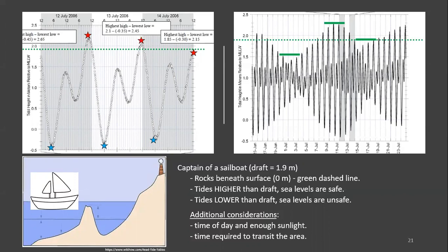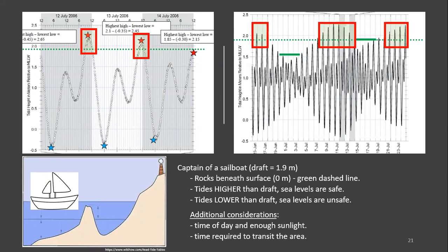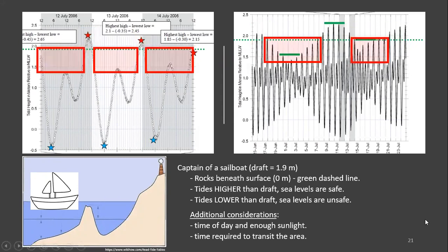Additionally, as if you're the captain of a sailboat, you will utilize these tide charts to determine when it is safe or too dangerous to sail through a given area. For example, you own a small sailboat with a draft of 1.9 meters. The draft of a boat is the depth of the hull beneath the surface. You are asked to sail through an area known to have rocks that lie just beneath the ocean's surface when the tidal level is at 0 meters. This depth is highlighted by a green dashed line on both tide charts. When tides are higher than the draft of your sailboat, sea levels are deep enough to sail safely. When tides are lower than the draft, sea levels are too shallow to sail safely. You will also need to take into consideration time of day and sufficient sunlight, as well as the time required to transit safely across the entire area.